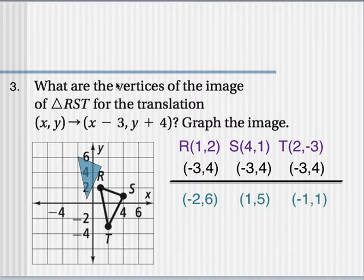And you should get these coordinates. But when they ask what are the vertices, negative 2 comma 6, 1 comma 5, and negative 1 comma 1. And don't forget they also say to graph the image.